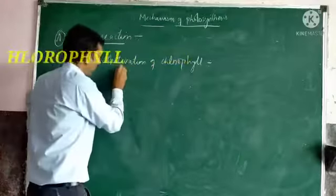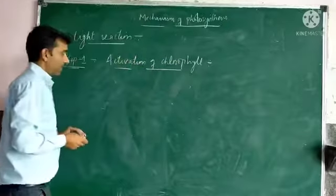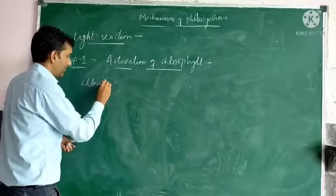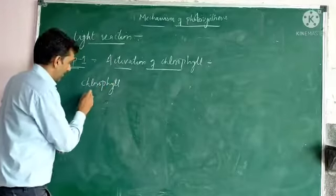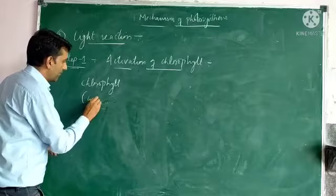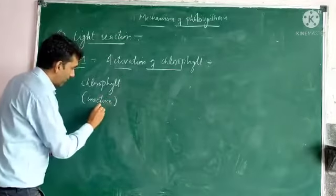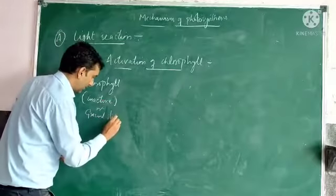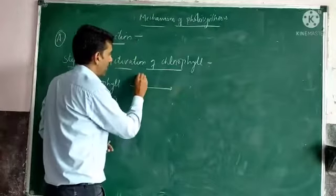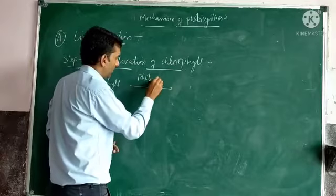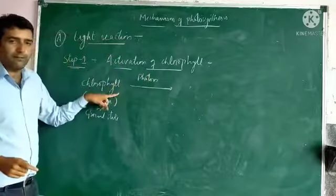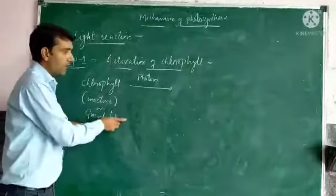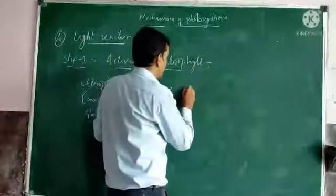Before light, if light is absent, this chlorophyll is in its ground state. But when a photon of light falls on this chlorophyll, it becomes active — it moves from the ground state to its excited state.